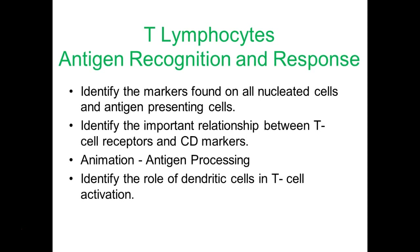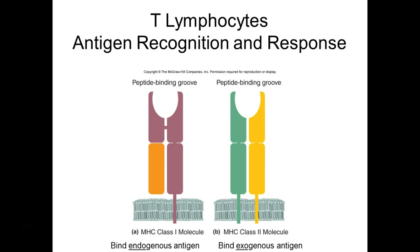Dendritic cells are phagocytic cells but they do more than just engulf things — they present information to T cells, which helps activate those T cells. MHC class 1 is a protein receptor on the cell surface with a small cleft that holds a piece of antigen the cell has been exposed to. Cells are always presenting their own antigens on their surface for inspection as well.